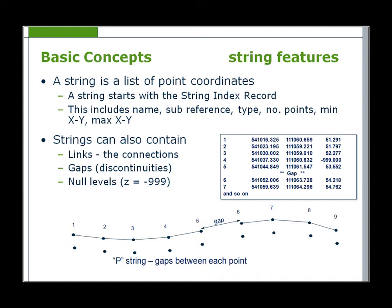The majority of features in MX have three dimensions: an X, Y and a Z. Master alignments have six dimensions — X, Y, Z, but also a chainage, bearing and radius.